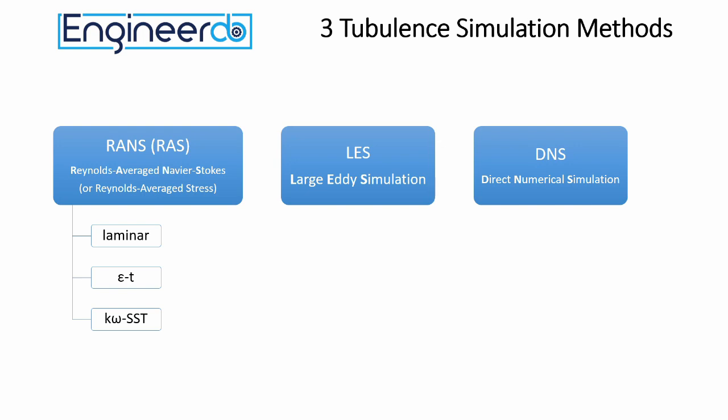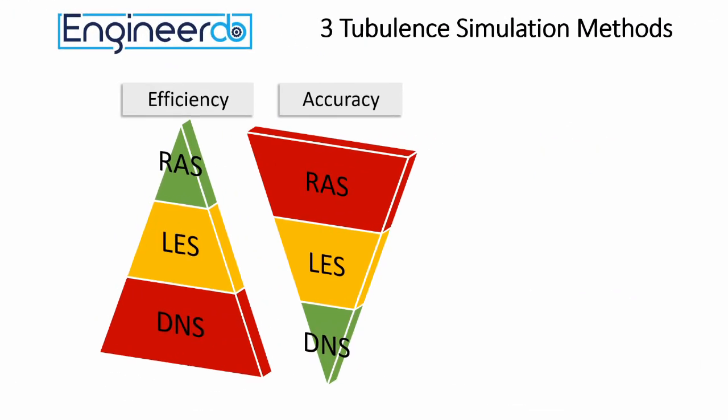Efficiency and accuracy are inversely proportional. The RAS is the fastest to solve but the least accurate simulation. LES is in the middle and DNS is very time consuming to solve and needs a lot of computational power but delivers the most accurate results.